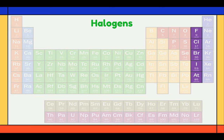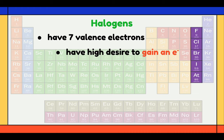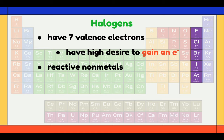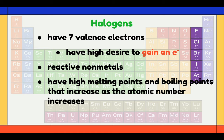Next, we have the halogens. Halogens have 7 valence electrons, and because of that, they have the highest desire to gain an electron to achieve the full octet. With that, halogens are very reactive non-metals. They also have high melting points and boiling points that increase as the atomic number increases.